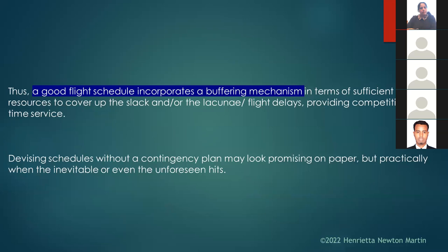A good flight schedule incorporates a buffering mechanism with sufficient resources to cover the slack or lacunae — shortcomings such as flight delays — while providing competitive on-time services. Devising schedules without a contingency plan may look promising on paper, but when something inevitable or unforeseen hits, it is not practical. A contingency plan — including both the problem and its remedy — should form part of a strategic airline schedule.